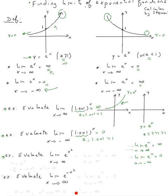Let's evaluate the limit of e to the x squared as x goes to infinity. The way to do this is always using substitution. I'm going to let u equal x squared. As x gets larger positively, x squared still gets larger and is still a positive number. So u approaches positive infinity, and therefore we get positive infinity.